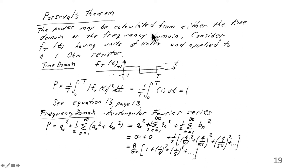The power may be calculated from either the time domain or the frequency domain. Consider f of t having units of volts and applied to a 1 ohm resistor. Then you would just use v squared over r to get the power. This is why, to find the power in the time domain, you would take the voltage squared, which gives you the power.